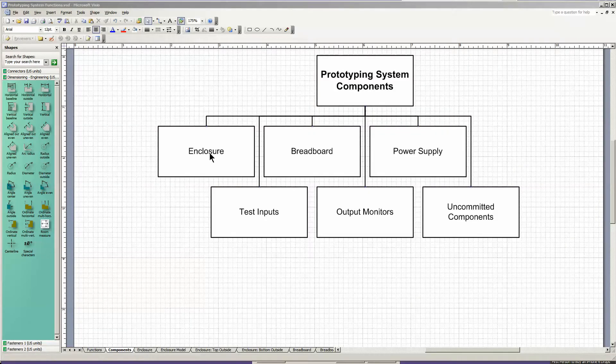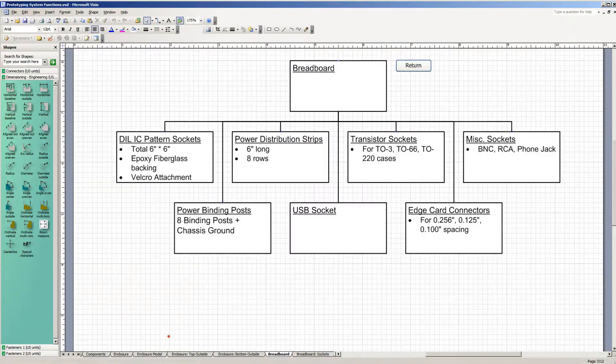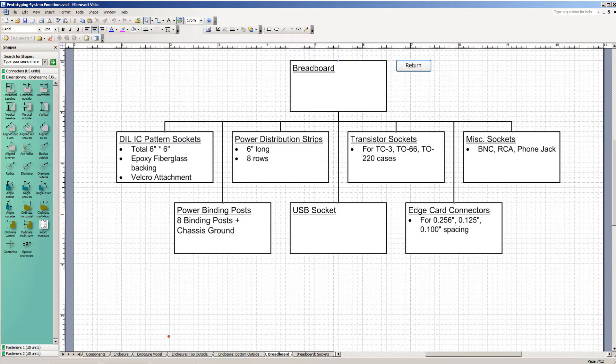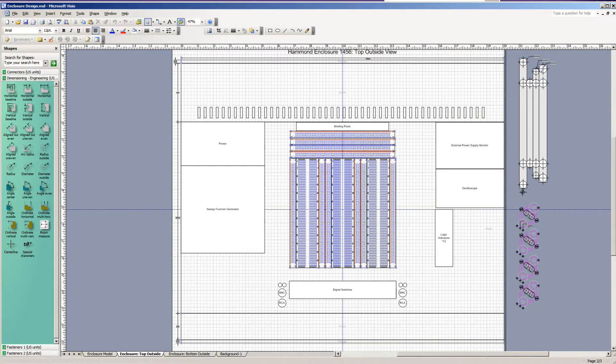The second function of the prototyping system is breadboard, the circuit being prototyped. The breadboard function consists of a number of components. The one that I'm going to tackle today are the power binding posts. The panel layout calls for the binding posts that are going to be distributing power to be top center of the top panel. What I want to have is one color of binding post per voltage and associated common or ground. In addition, I want to have one terminal for chassis ground, in case that's needed. And somewhere in there, I'm going to have a USB connector to provide 5 volts power to circuits being prototyped.